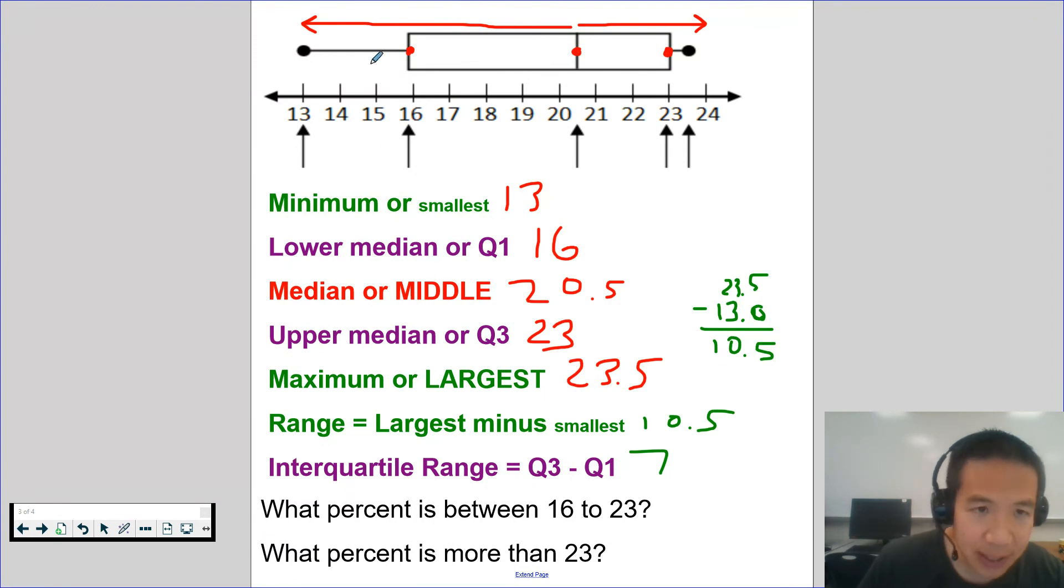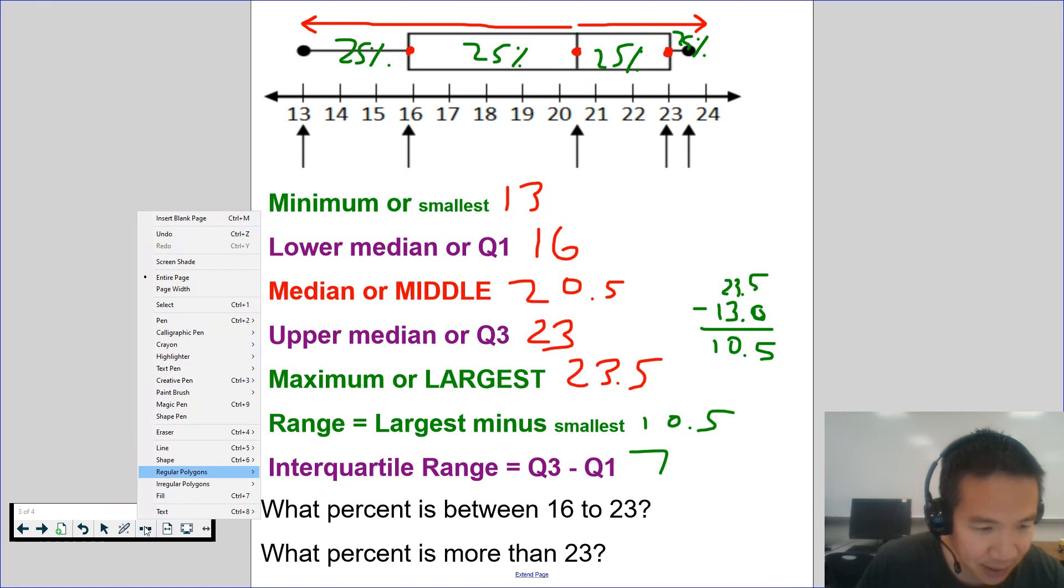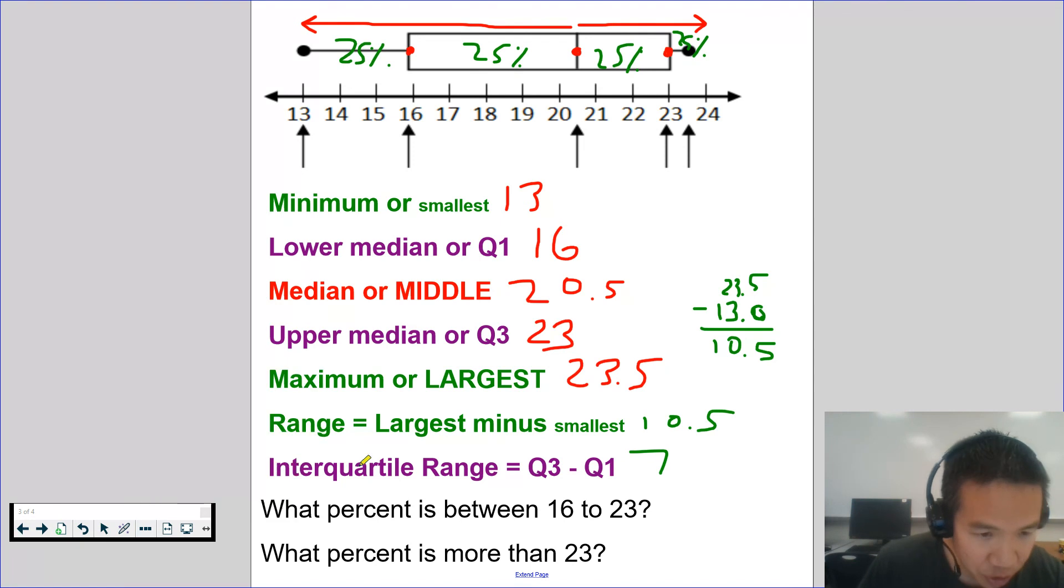And now let's label the percents. We know the whole box plot is 100%. This is 25%. 25% between 16 to 20 and a half. 25% between 20 and a half to 23. And 25% between 23 and 23 and a half. What percent is between 16 to 23? So it's right here. This is the middle 50%. So it's 50%.